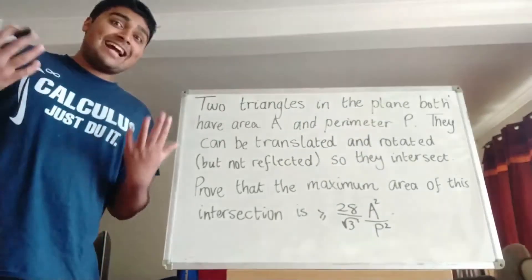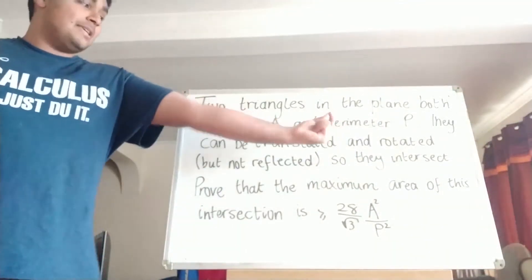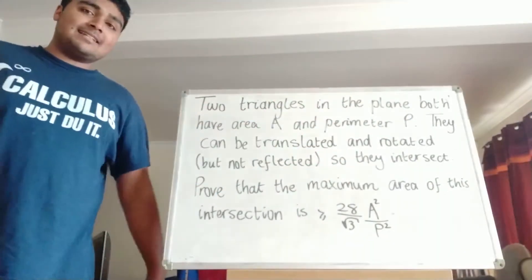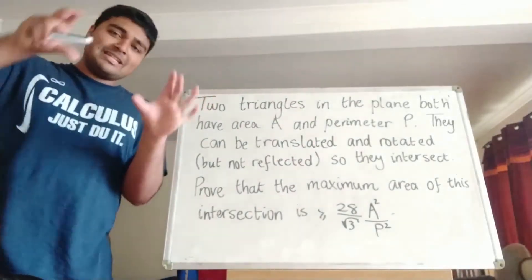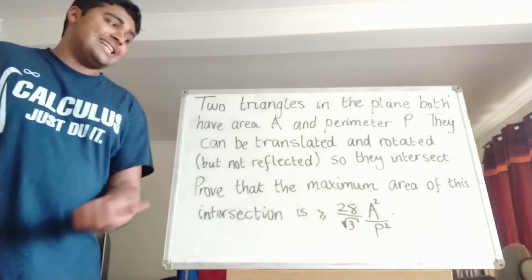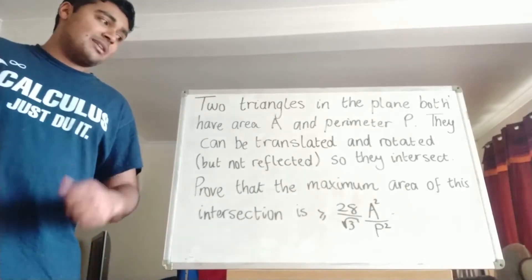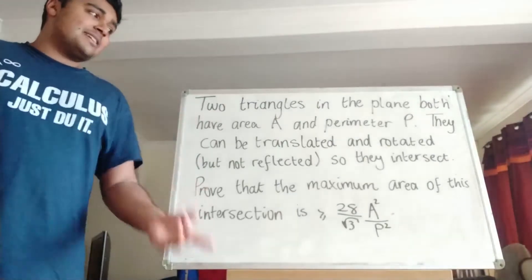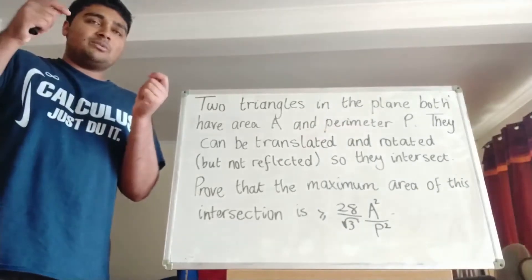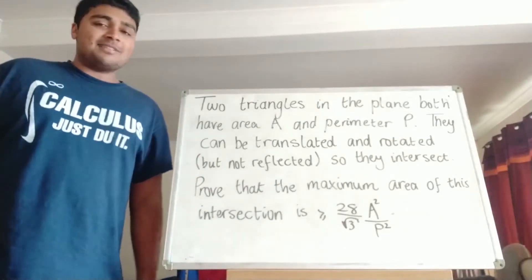This is the problem we have for today, and it's a geometry problem. We have two triangles in the plane. Both have area A and perimeter P. They can be translated and rotated in the plane, but they cannot be reflected, so that they intersect. We want to prove that the maximum area of this intersection is at least 28 over square root of 3 times A squared over P squared.